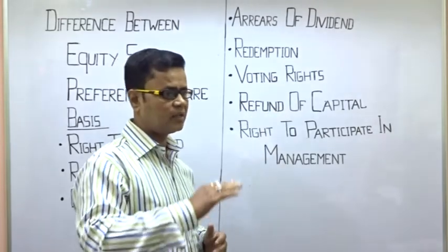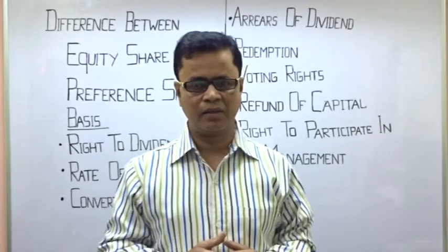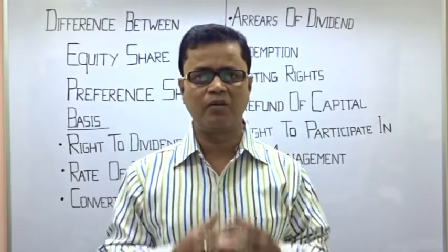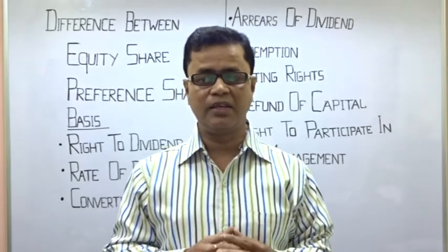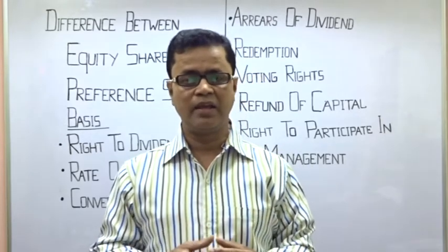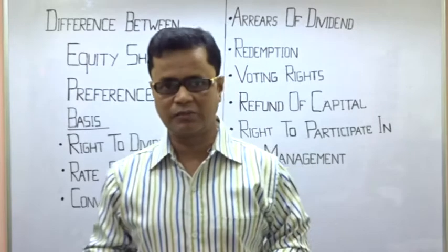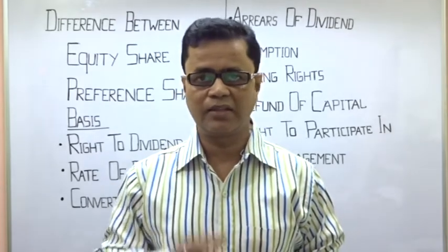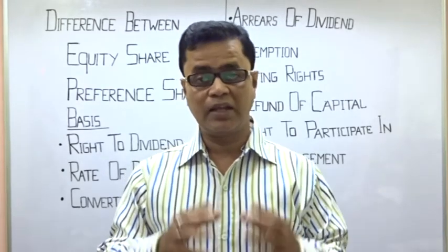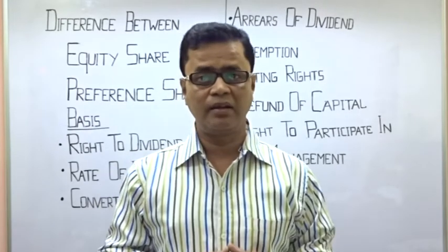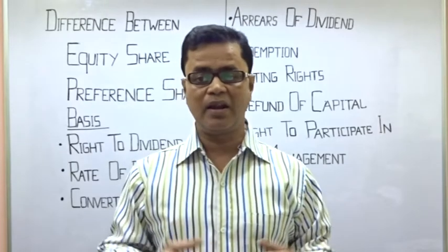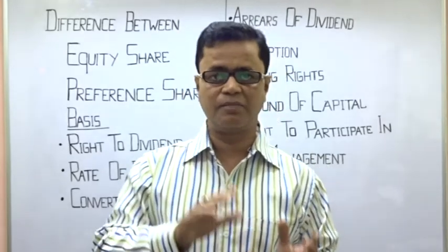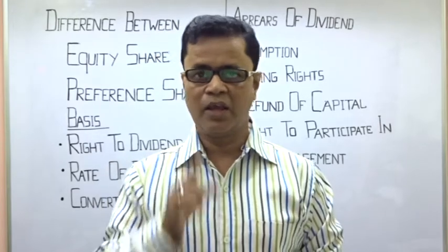Next aata hai Refund of Capital — refund of capital ka matlab, jo capital contribute kiya tha share holders ne, unka paisa refunding ka process kya hai on winding up. On winding up, yani jab company band hoti hai, the Preference Share capital is repaid before Equity Share capital is paid. Yani, sabse pehle company legal expenses aur ventors ko payment karti hai, uske baad Equity Share ke pehle Preference Share holder ka payment kiya jata hai. On winding up, Equity Share capital is repaid after the Preference Share capital is paid — yani Preference Share ka payment ho jaane ke baad Equity Share holders ko payment milta hai.